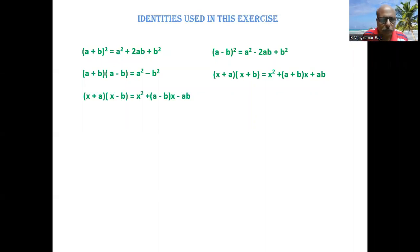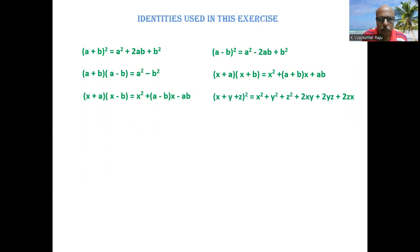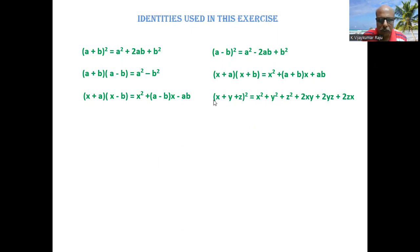(x+a)(x-b) = x² + (a-b)x - ab. And (x+y+z)² = x² + y² + z² + 2xy + 2yz + 2zx. That's all you need to remember.